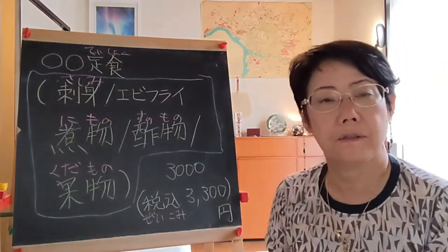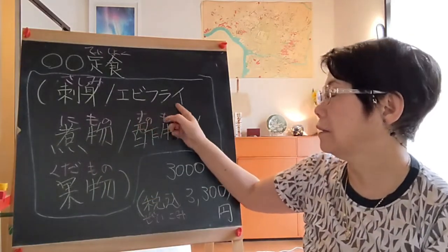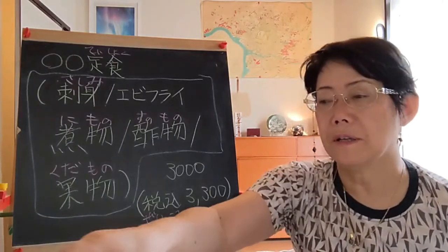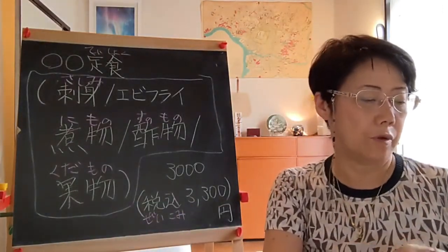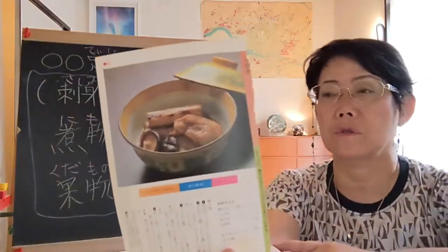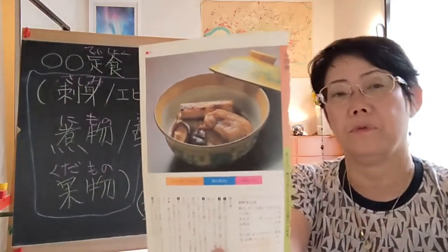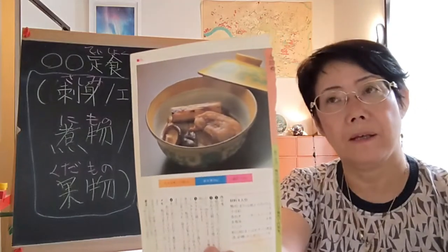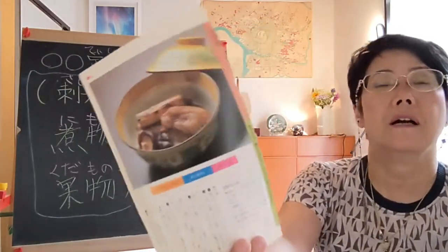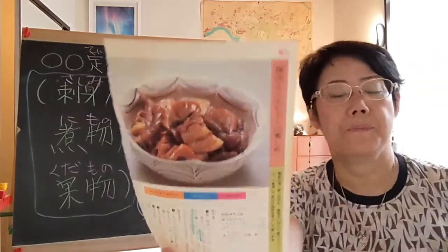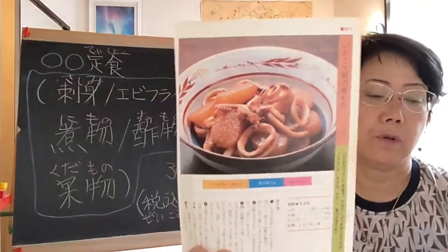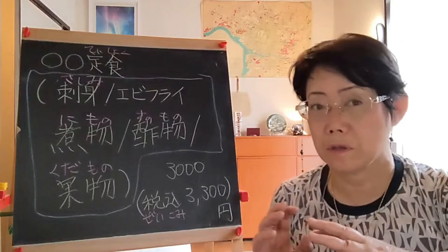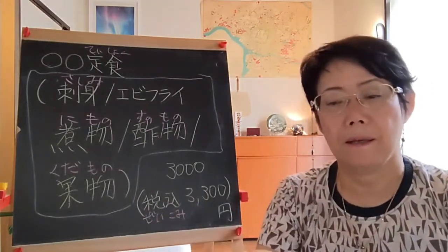Sashimi is raw fish. Ebi fry is deep fried shrimp. Nimono is vegetables or tofu, sometimes with a little chicken or squid, cooked with soy sauce — shoyu — and some sugar or mirin. There are many kinds of nimono.